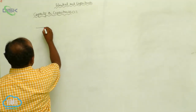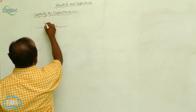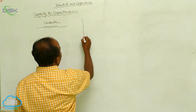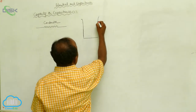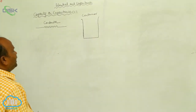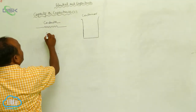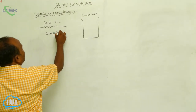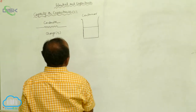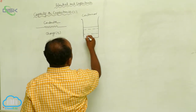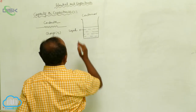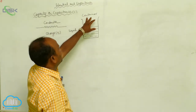Let us consider a conductor. Now let us also consider a container. A conductor stores charge, similarly a container stores liquid. Just as the conductor stores charge, a container stores liquid.